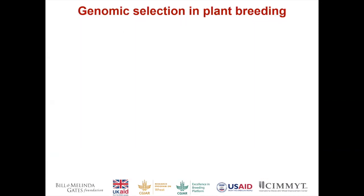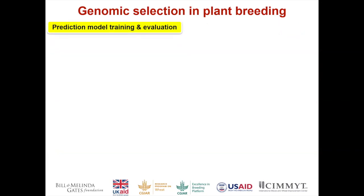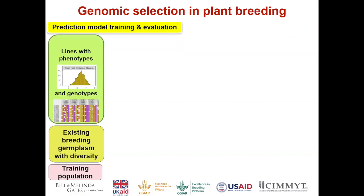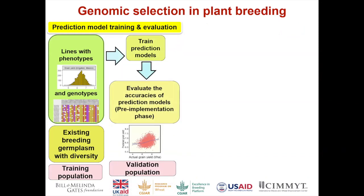I'll give a very brief introduction to genomic selection for those not very familiar. The first step is prediction model training and evaluation. We have lines with both phenotypes and genotypes — an existing panel with diversity — that is the training population. We use these lines to train prediction models and evaluate the accuracy: what is the correlation between the actual and the real trait performance? We at CIMMYT are currently in the pre-implementation phase, testing genomic selection for different traits over the past several years.